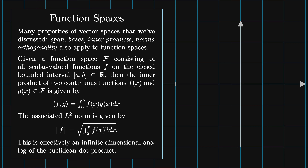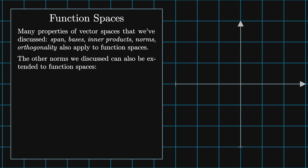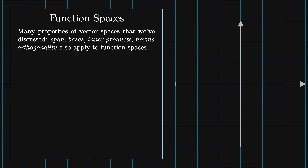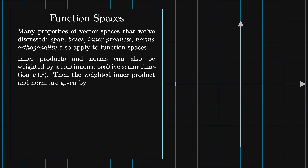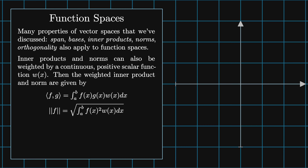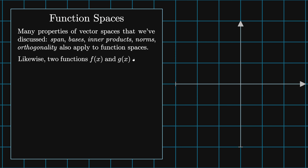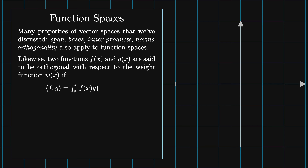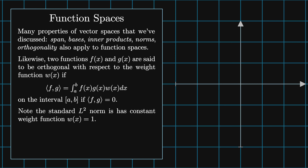This is effectively an infinite dimensional analog of the Euclidean dot product. The other norms we discussed can also be extended to function spaces: the L1 norm equals the integral from a to b of the magnitude of f of x dx, and the L-infinity norm equals the max of the magnitude of f of x on the interval a to b. Inner products and norms can also be weighted by a continuous positive scalar function w of x. The weighted inner product is given by the integral from a to b of f of x times g of x times w of x dx, and the associated norm is the square root of the integral from a to b of f of x squared times w of x dx. Two functions f of x and g of x are then said to be orthogonal with respect to the weight function w if the weighted inner product equals zero. Note the standard L2 norm has constant weight function w of x equals one.